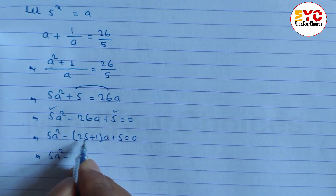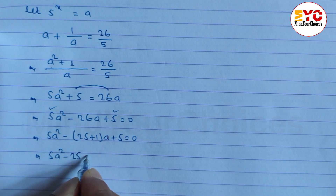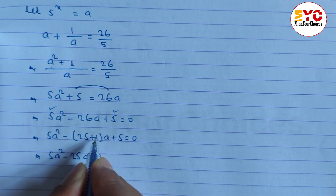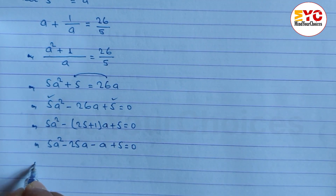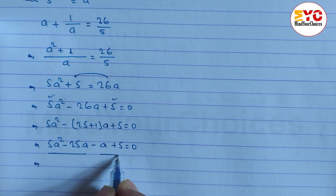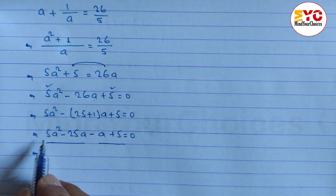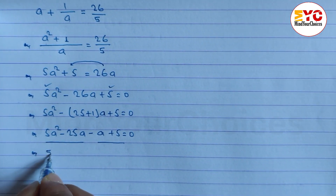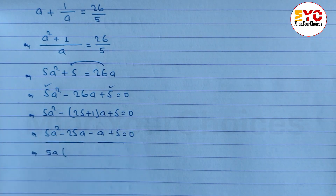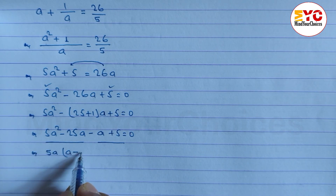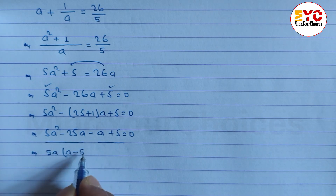So: 5a squared minus 25a, then minus 1 into a. a plus 5 is equal to 0. From the first two terms we take common, and from the last two terms we take common. 5 is common from 5a squared minus 25a, leaving a times (a minus 5).